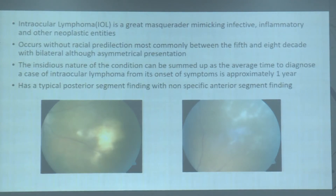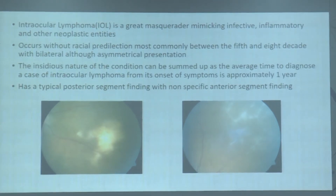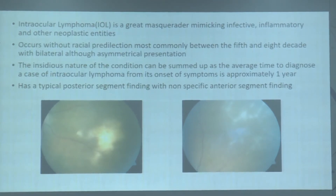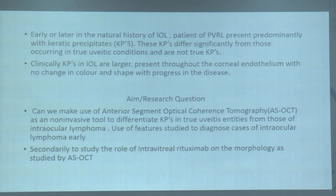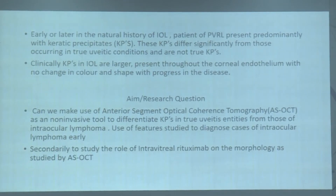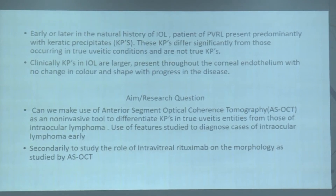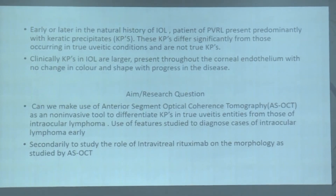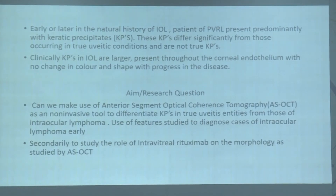In that 1 year, it has varied presentations where it presents to different ophthalmologists and undergoes various treatments. Patients of lymphoma have a lot of keratic precipitates. On cursory examination, these keratic precipitates are very similar looking to those in true uveatic entities, but if you look and examine closely, you see they are not very similar.